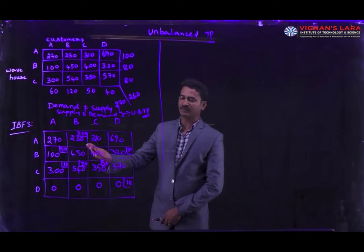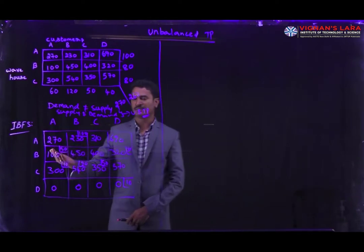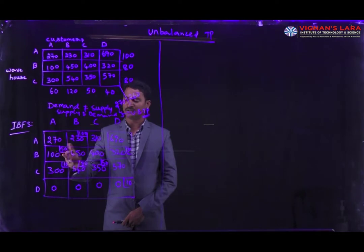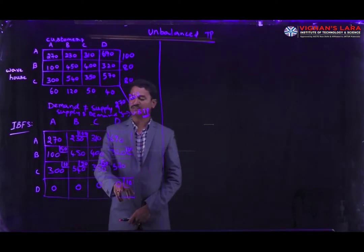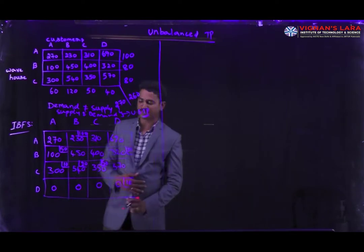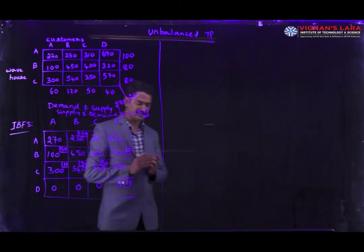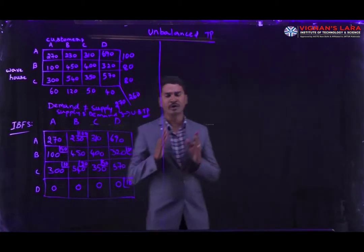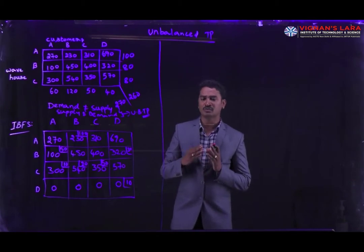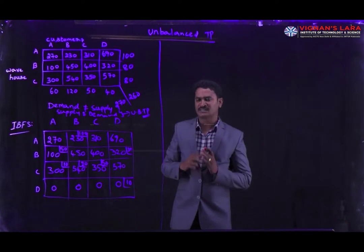After the solution, we obtain the allocations — total we have seven allocations made with the help of Vogel's approximation method. After finding the initial basic feasible solution, we are going to calculate the optimal solution. We have two methods to find the optimal solution: the stepping stone method and the modified distribution method.